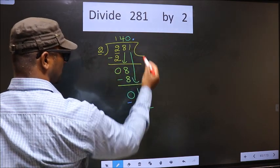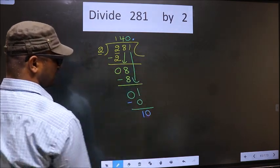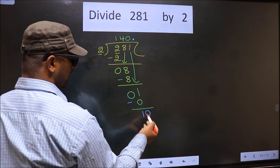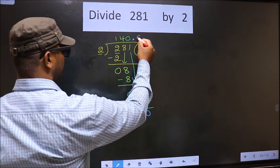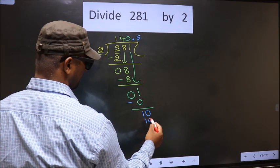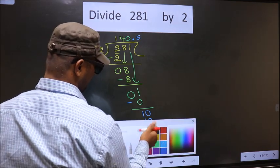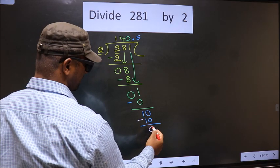So now, you can put a dot and take 0 here. Here 10. When do we get 10 in 2 table? 2 fives, 10. Now, you subtract. 10 minus 10, 0.